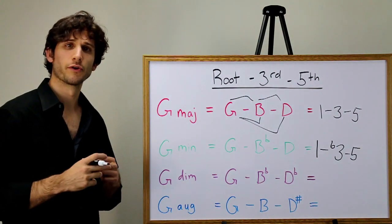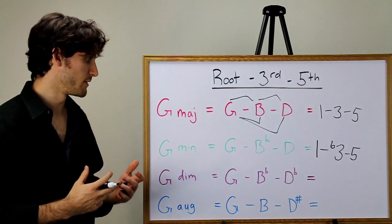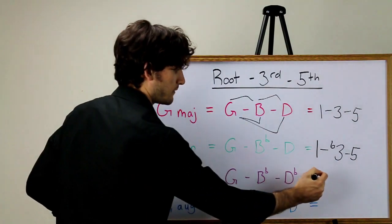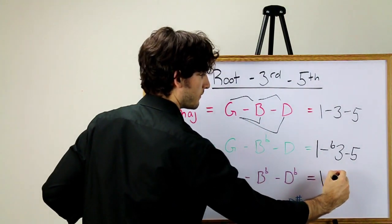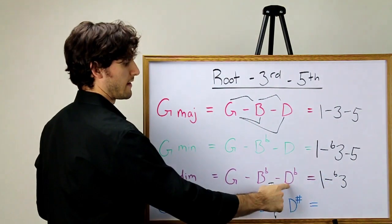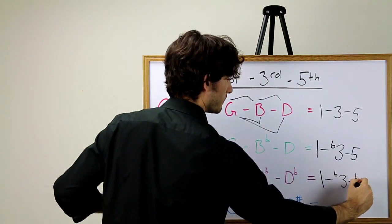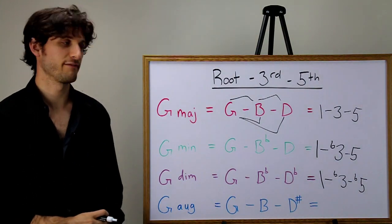Remember, we took our major chord to be a foundational reference point in the system. So relative to the major chord, the diminished chord has a root which is the same as one, it has a flat three, and it also now has a flat five. One, flat three, flat five.